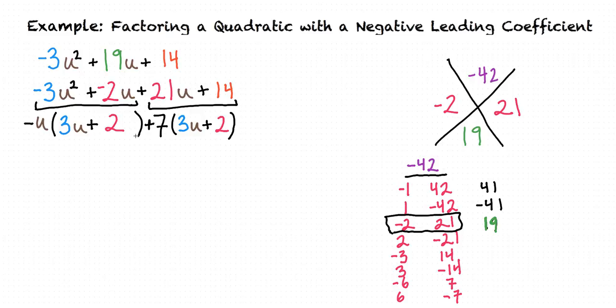Our final step, now that we have these two identical factors in each term, is to factor (3u + 2) out of both of these added terms. This gives us (-u + 7). And that is our final answer.